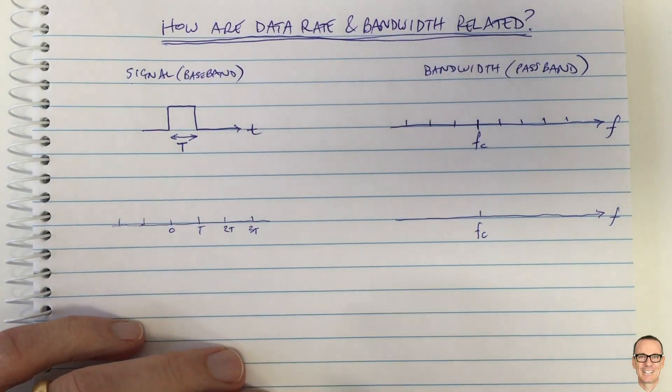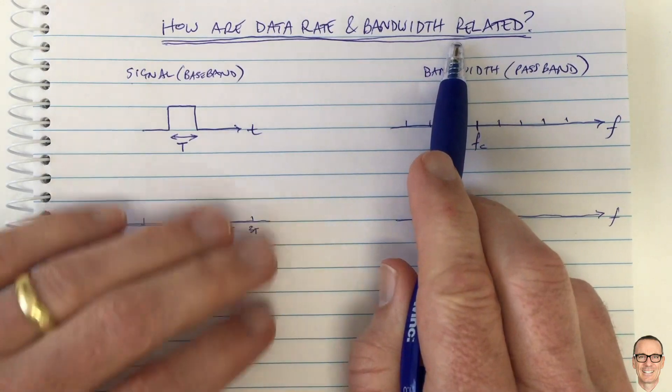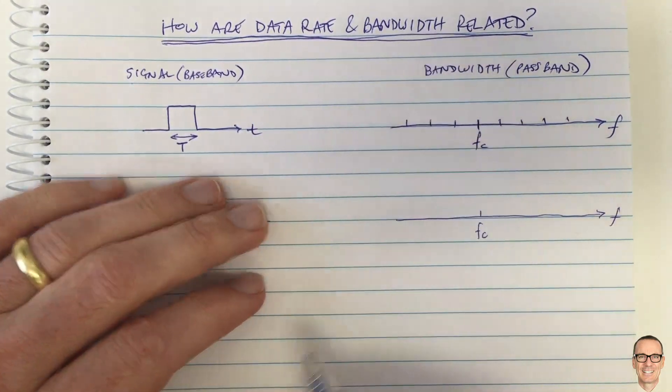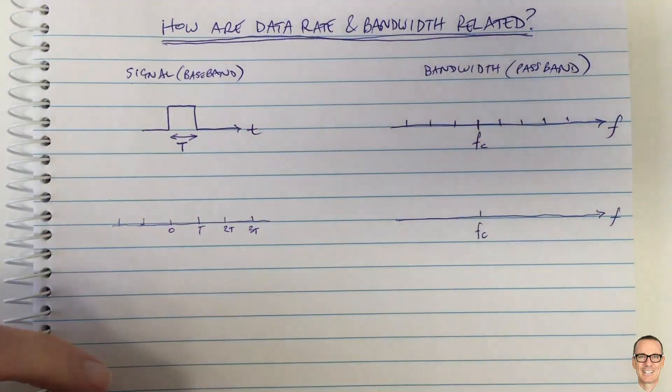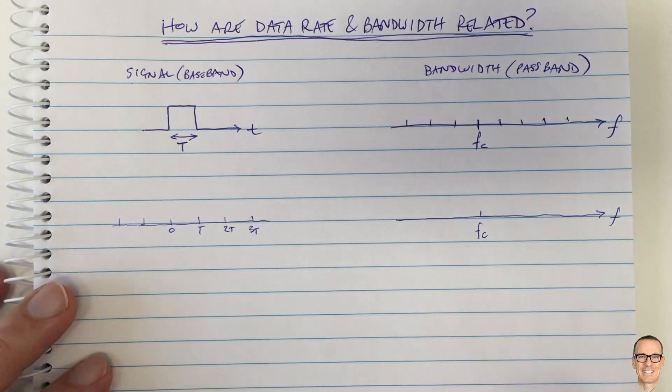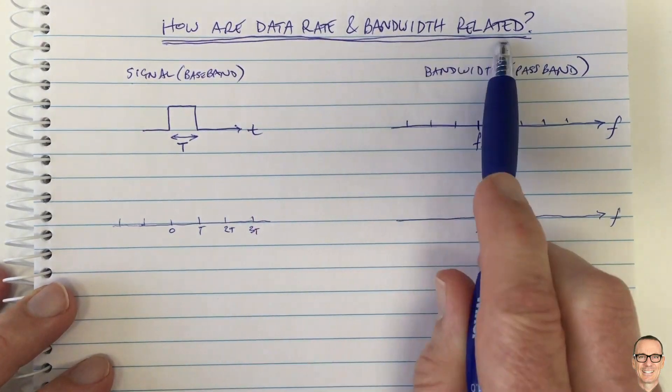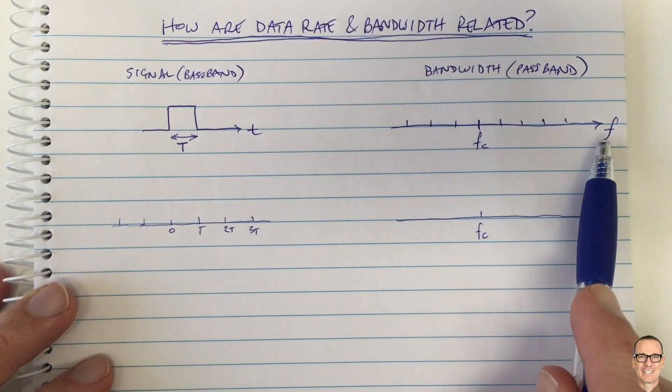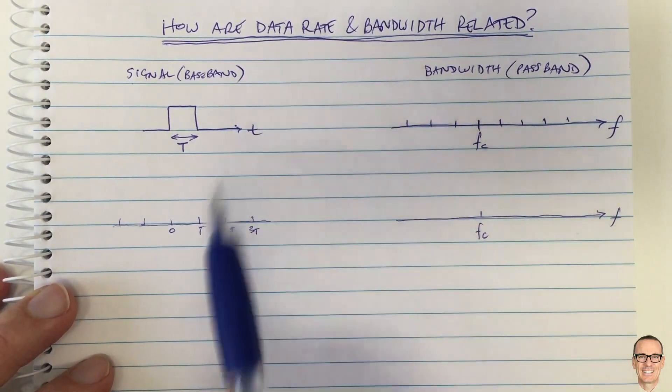Let's look at how data rate and bandwidth are related. Sometimes people mix the two up in general conversation. You might hear someone say our system doesn't have enough bandwidth or our data processor doesn't have enough bandwidth. Are they meaning actual bandwidth in terms of frequencies or are they talking about data rate?